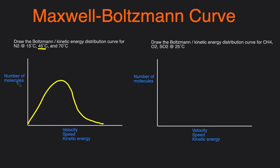The way to read this is: the y-axis is usually the number of molecules, and the x-axis could be velocity, speed, or kinetic energy. You can see that some molecules are moving at a really high speed, some at a really slow speed, and the majority are moving near the middle at the very peak of the curve. So that could be the distribution curve at 45°C.